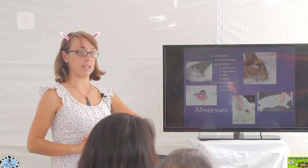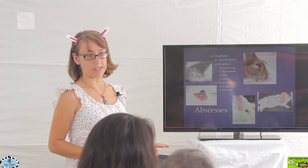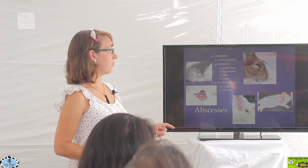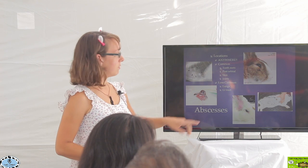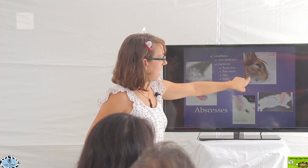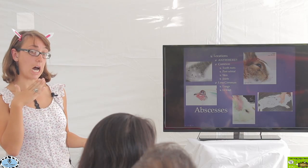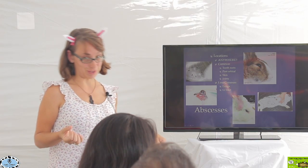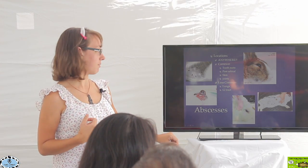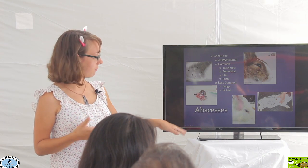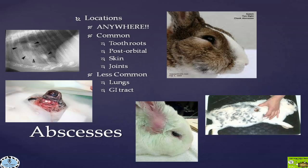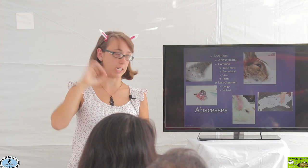Abscesses can be located anywhere. Common areas that we see abscesses in rabbits include tooth roots — this rabbit here has an abscess on the side of its face associated with a tooth root. Postorbital means behind the eye, and those are often associated with tooth roots as well. This picture shows a rabbit that was having surgery for an abscess behind its eye. That white stuff is pus, and the eye is actually bulging out because of all this pus sitting right behind it and pushing it out.